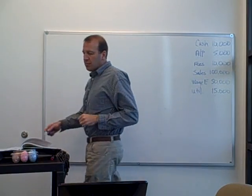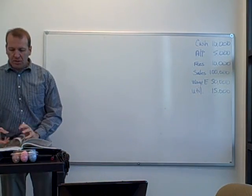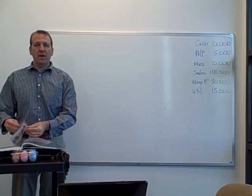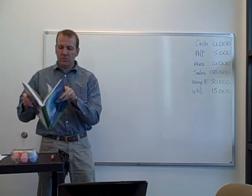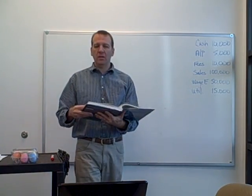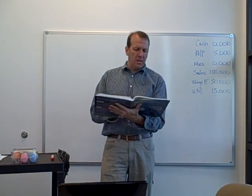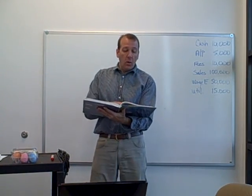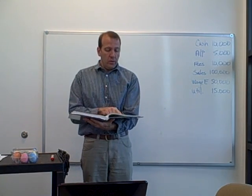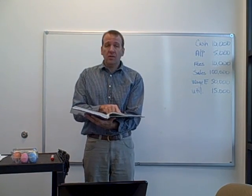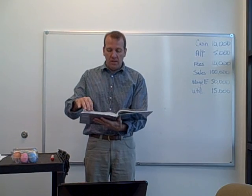Let's get started into chapter four. We're going to first look at these transparencies that are in your textbook. We're just going to go through them very quickly because they're very easy to understand. The orange section, before you put the first transparency over, is the unadjusted trial balance.